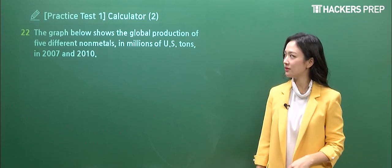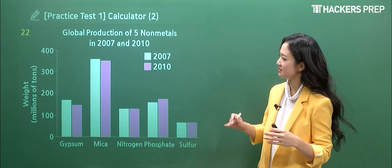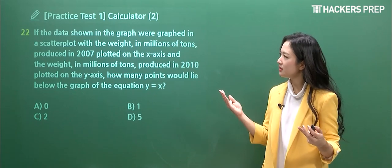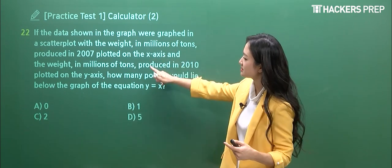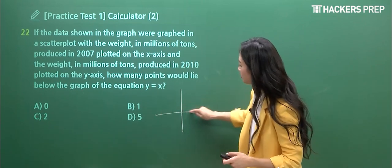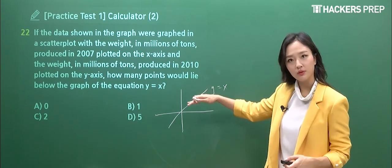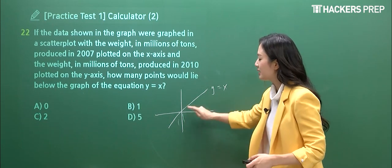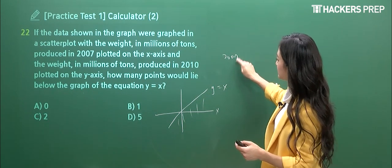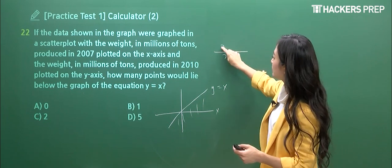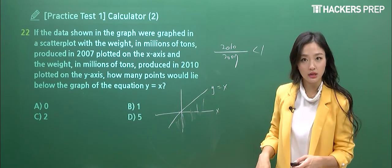So let's move on to the next question of number 22. They're presenting a graph, and let's look at it real quick. We have five different non-metals in terms of 2007 and 2010. And the question's like, oh, if you wanted to plot the scatter plot, and 2007 is on the x-axis, 2010 y-axis, how many points would lie below the graph of y equals to x? So what does this mean? Y is equal to x is going to refer to a one-to-one relationship, right? They're equal to each other. But how many would lie below this?